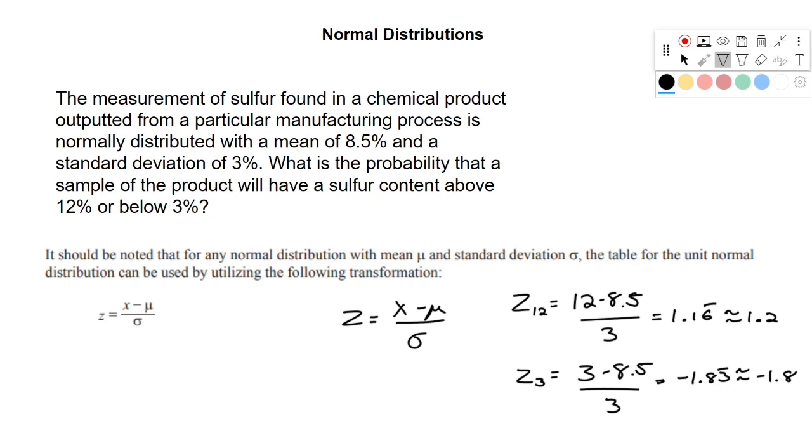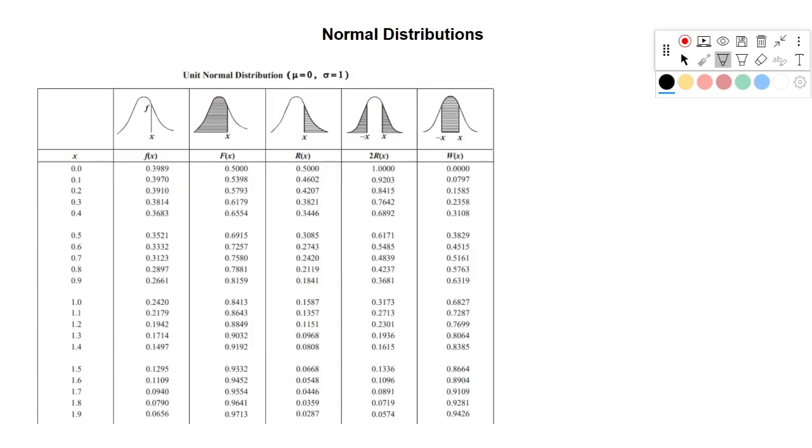So now we have our two z values, and we can go to the end of that reference section, and you'll see that there's a normal distribution table. So I'll remind you again, z of 12 is 1.2, z of 3 is negative 1.8.